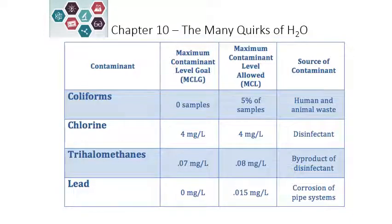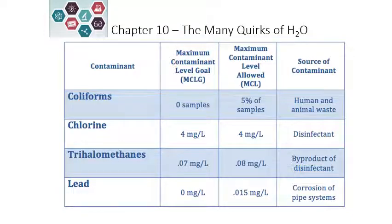For lead, the goal is 0.015 parts per million, and the allowable level is also 0.015 parts per million, or 15 parts per billion. This comes from the corrosion of pipes that bring water into the house or facility. You might ask why the allowed level is higher than the goal — a lot of this has to do with regulations passed by the government, so the allowed level is sometimes higher than the goal.